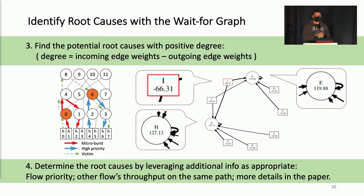In the last step, we'll try to determine the root causes by leveraging additional information, like the flow priority can be used to identify whether this flow is coming from a microburst or coming from a high priority. More details about this part can be found in the paper.